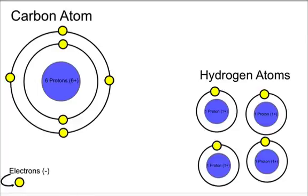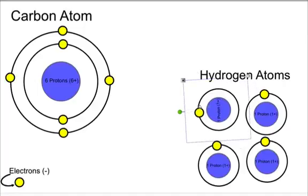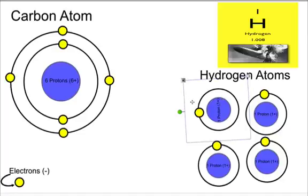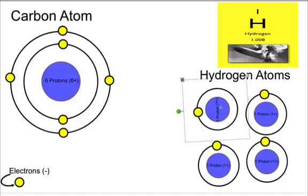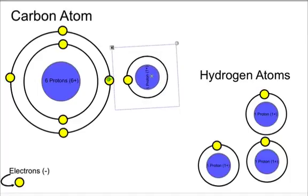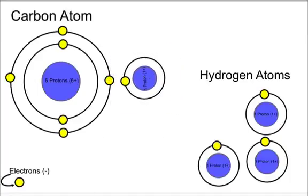So what happens with a covalent bond — covalent is basically a sharing bond — is it will try to find other atoms that need help filling their energy levels. Hydrogen is a great example. Hydrogen is a very reactive atom because it has only one electron in its shell. So what it'll do is if they get close enough, they'll actually come together and share their electrons. So it'll spin around like this, and for a little while this hydrogen will have both electrons spinning around, giving it 2 in that first orbital or energy level — which makes it full. And then carbon will take this electron every once in a while, giving it 2 there.